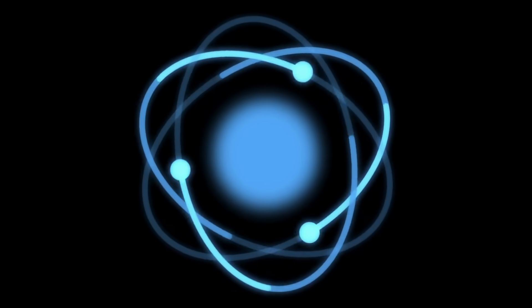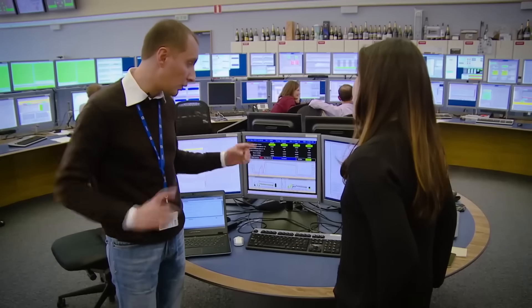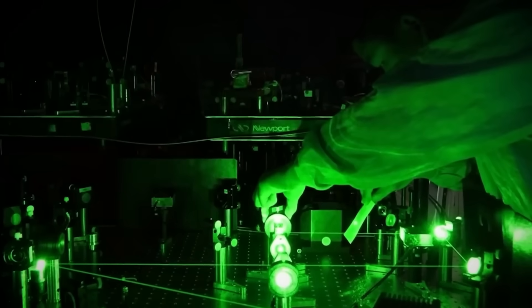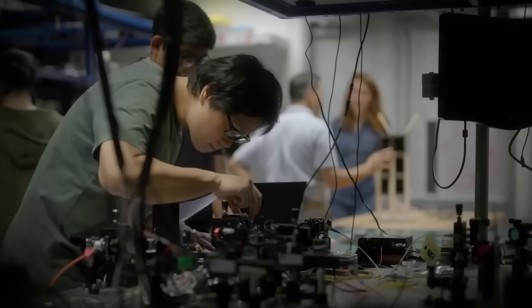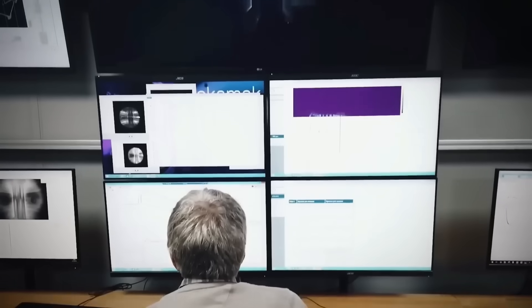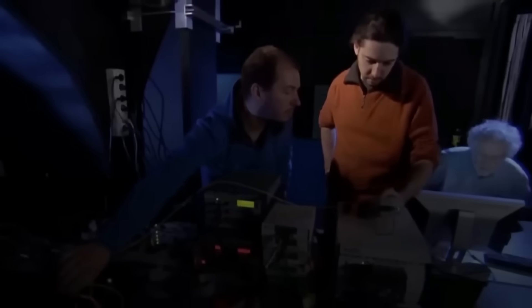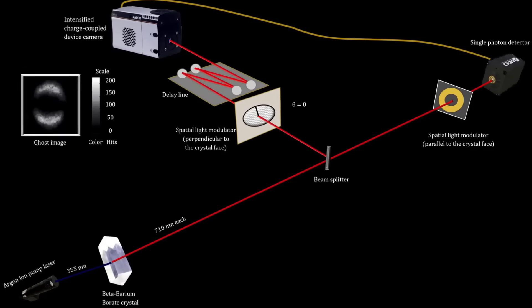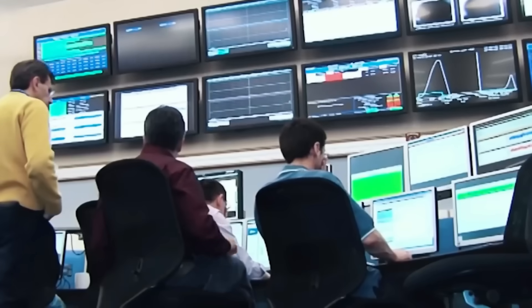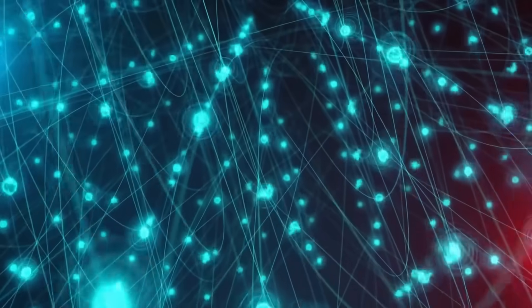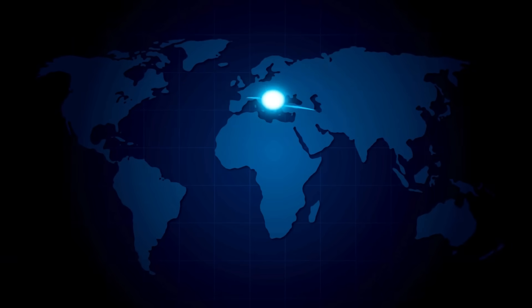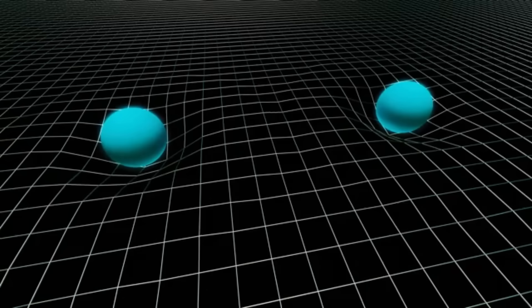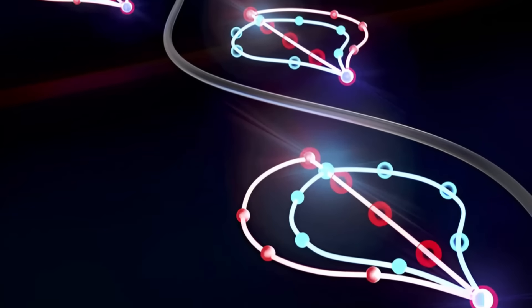Let's break down how quantum teleportation actually works, because understanding the process makes MIT's alleged ghost even more extraordinary. Picture three characters: Alice, Bob, and Charlie. Charlie is the particle whose quantum state Alice wants to send to Bob across the lab. Alice and Bob share an entangled pair of particles, think of them as quantum twins, mysteriously connected no matter how far apart they are. Here's the process. Alice takes Charlie and performs a joint measurement with her half of the entangled pair. This destroys Charlie's original state completely. But the measurement creates two classical bits of information, like a recipe that Bob can use to recreate Charlie's state. Alice sends those two bits to Bob through normal communication. When Bob receives them, he performs a specific operation on his entangled particle. If everything works perfectly, Bob's particle now holds the exact same quantum state Charlie originally had. The information has been teleported.